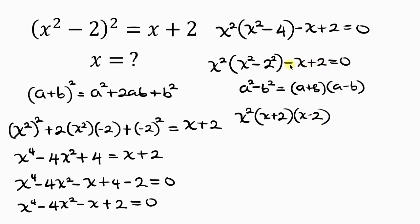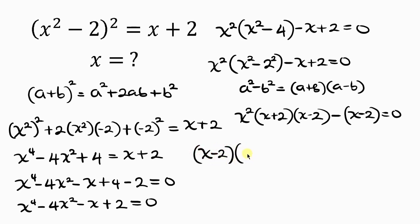Next, we factor out negative 1 from the remaining terms: -(x - 2). Notice that (x - 2) is now common throughout, so we factor it out. Dividing x²(x + 2)(x - 2) by (x - 2) gives x²(x + 2), and dividing -(x - 2) by (x - 2) gives -1. So we have (x - 2)[x²(x + 2) - 1] = 0.